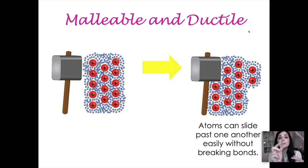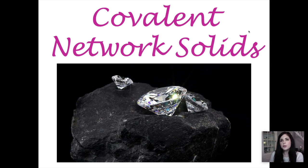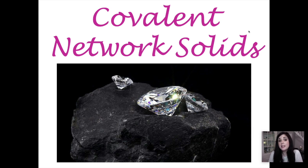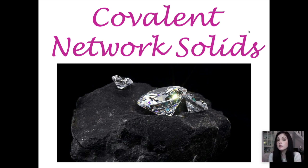The major properties of metallic solids are that they conduct electricity and heat very well, and that they're malleable and ductile. They have variable melting points because it depends on the metal. Covalent network solids are made up of all non-metals. Ionic solids are comprised of metals and non-metals because they have ionic bonds. Metallic solids contain just metals, including alloys, and covalent network solids contain just non-metals.